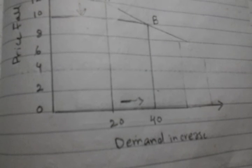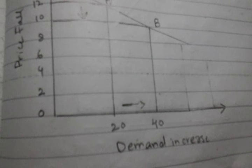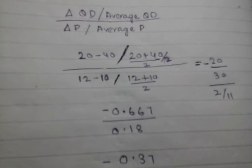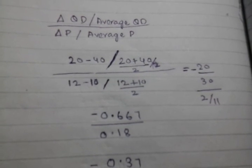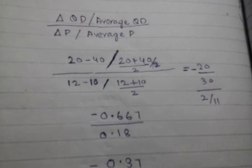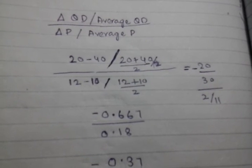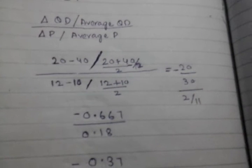For getting change in demand, we will find the difference between 40 and 20. So we will do 20 minus 40, so we get minus 20. In order to get average quantity demand, we will add 20 plus 40 and then divide by 2, so we will get 30.